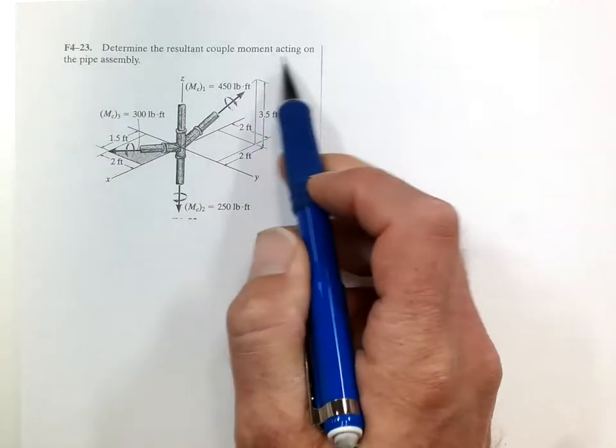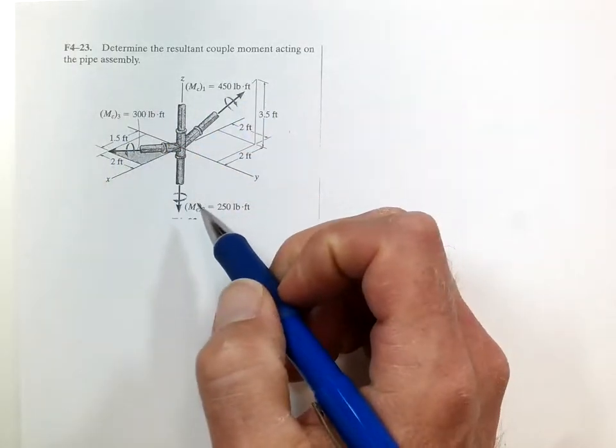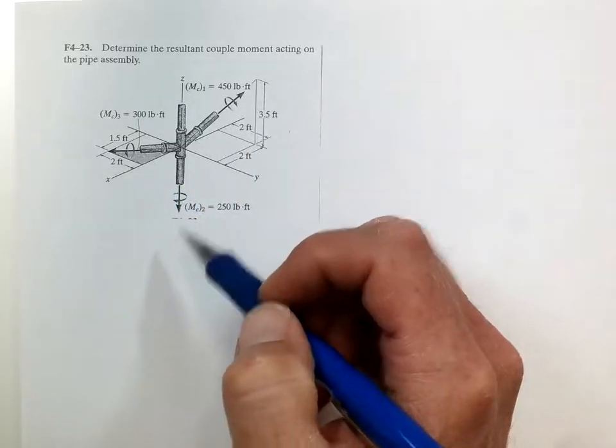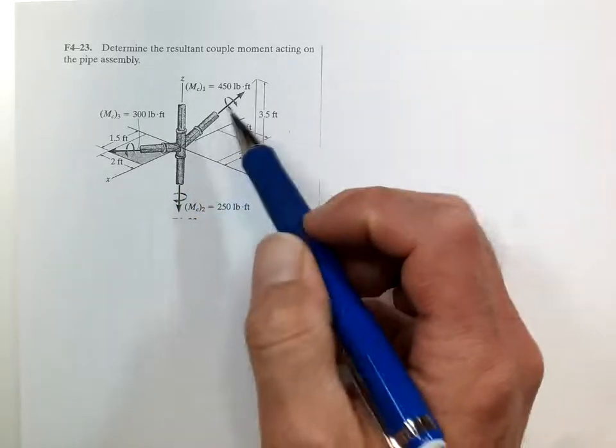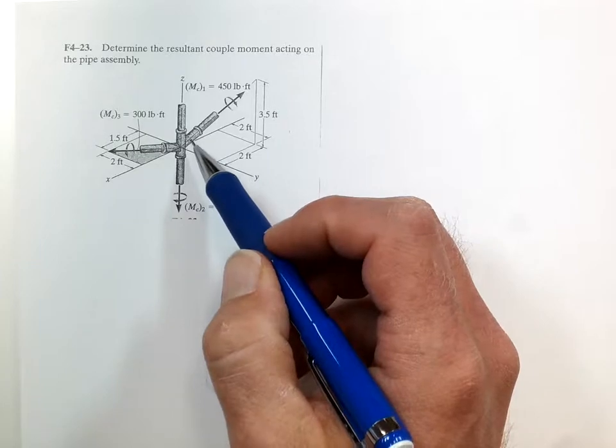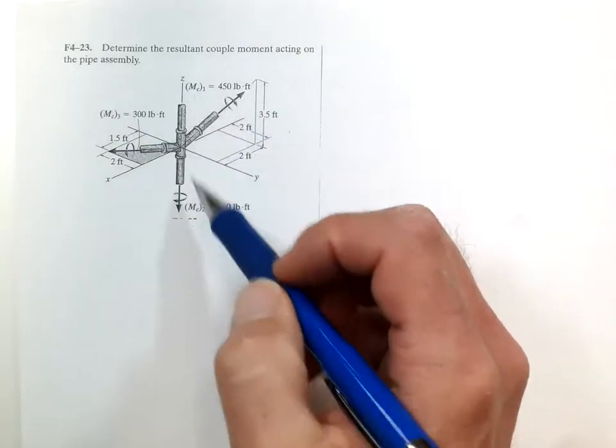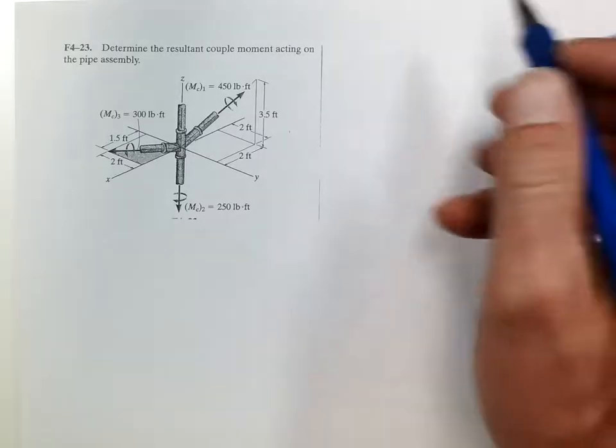Determine the resultant couple moment acting on the pipe assembly. So we have three moments here. Now, moments are vectors just like force or distance, and so we need to break these into components and then add them up. And that's the resultant moment.